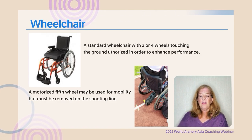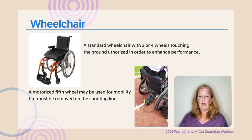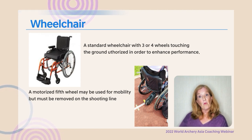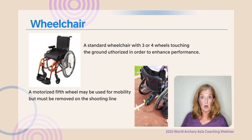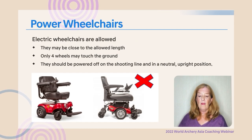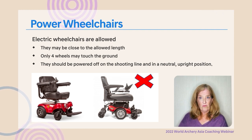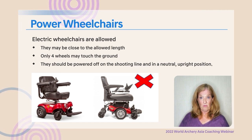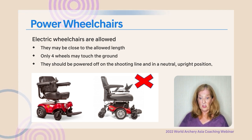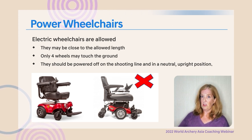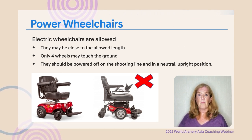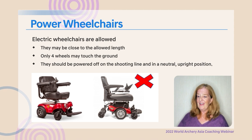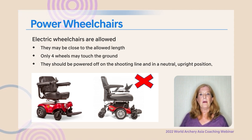For a wheelchair, it must be a standard wheelchair with three or four wheels touching the ground. A motorized fifth wheel can be used to get on and off the field; however, once on the shooting line, that fifth wheel must come off. Power wheelchairs are fully acceptable as long as they're within the 1.25-meter regulation. Only four wheels may touch the ground, and once on the line the wheelchair should be turned off and the athlete must sit in an upright position. A wheelchair with six wheels, for example, would not be acceptable.